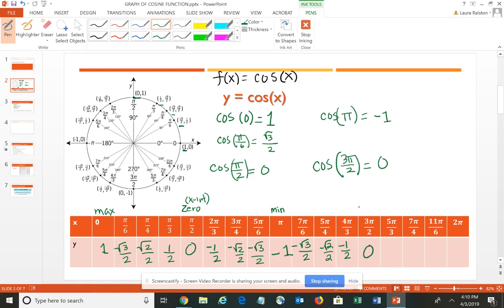So I have a zero or an X intercept at 3 pi halves. Continuing the rotation, cosine of 5 pi over 3 would be positive 1 half. Cosine of 7 pi over 4 is square root 2 over 2. Cosine of 11 pi over 6 is square root 3 over 2. And then we're back around to the full revolution and the cosine of 2 pi is 1, which is our maximum point.